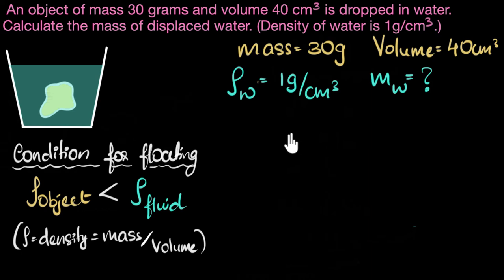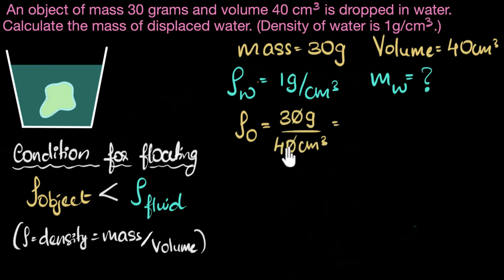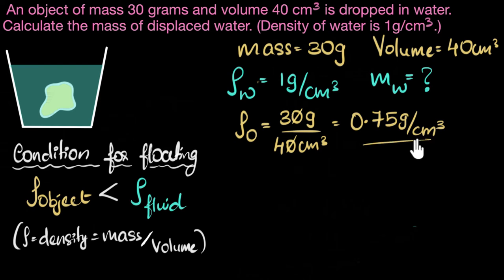Can you try this first? We know the mass of the stone and the volume of the stone, so can you calculate the density and check whether it's going to float or sink? The density of our object is its mass divided by its volume: 30 grams divided by 40 cm cubed. The zeros cancel — three by four is 0.75 — giving 0.75 grams per cm cubed.